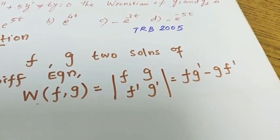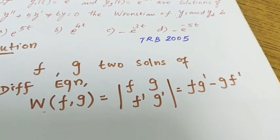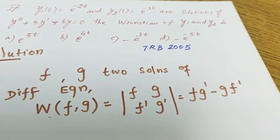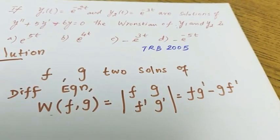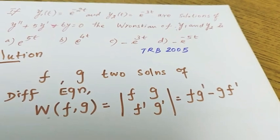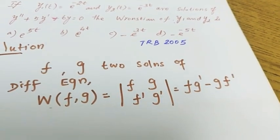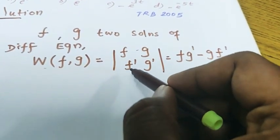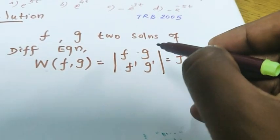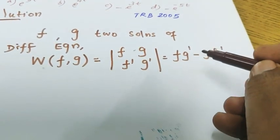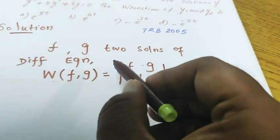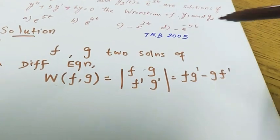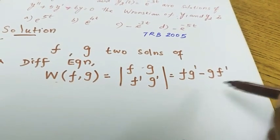For three solutions F, G, H: the Wronskian W(F, G, H) has first row F, G, H; second row F', G', H'; and third row F'', G'', H''. In general, for n functions, the determinant is formed with rows from the function up to the (n−1)th derivative — giving an n×n matrix whose determinant value we compute.